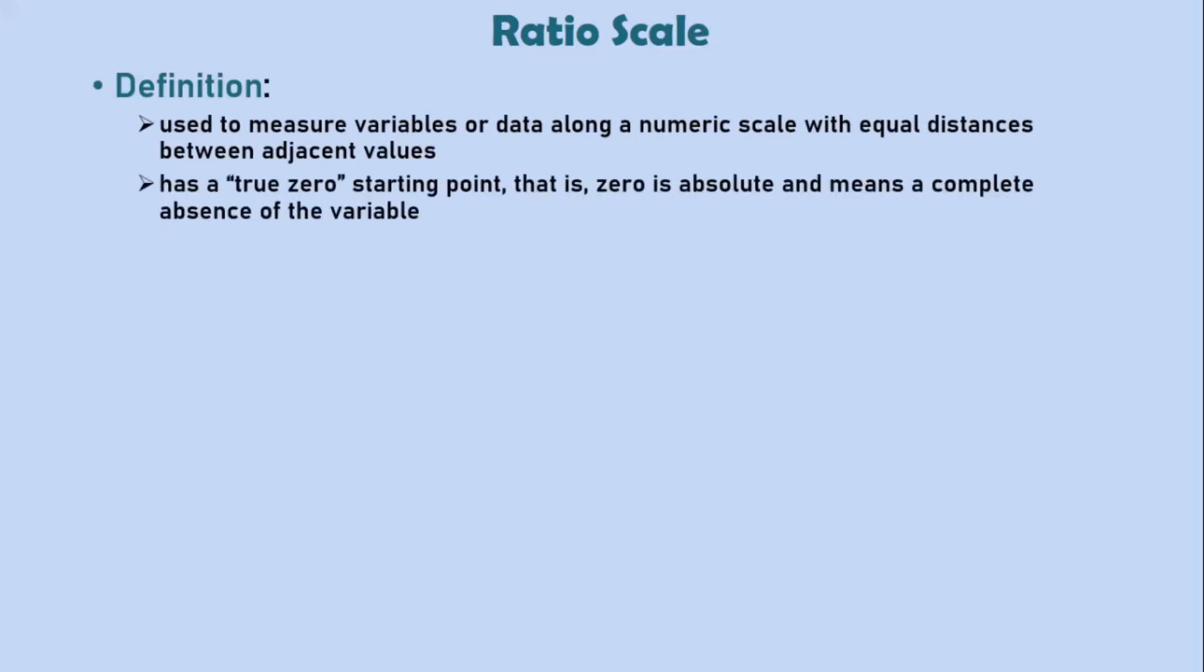The highest level of measurement is the ratio scale, which measures variables or data along a numeric scale with equal distances between adjacent values and also has a true zero starting point. Every characteristic of an interval scale applies to a ratio scale,